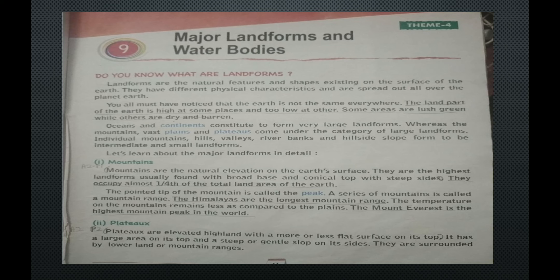Different oceans and continents constitute to form very large landforms. When we see the oceans and continents, different types of plateaus and planes are there — these are the forms of the landforms. Mountains, vast plains and plateaus come under the category of large landforms.